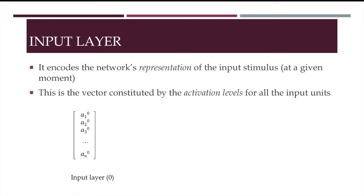The input layer encodes the network's representation of the input stimulus at a given moment and is constituted by the activation levels of all the input units. So this is the vector for the input layer which I've called layer 0. Each number corresponds to the activation value for a unit in the layer.